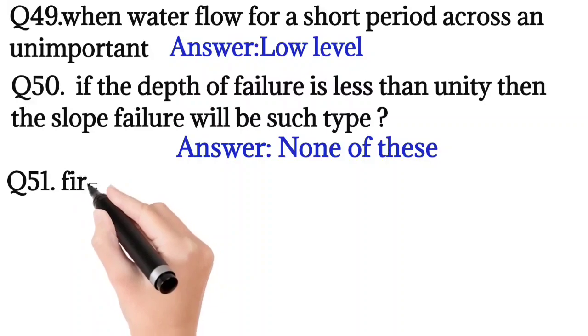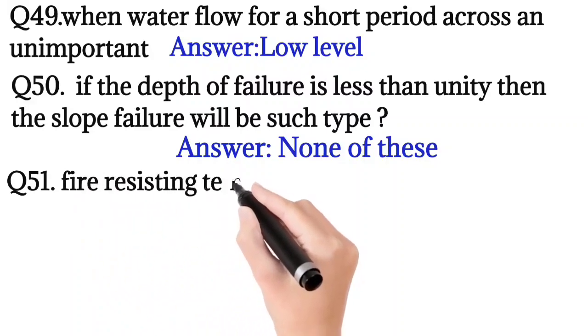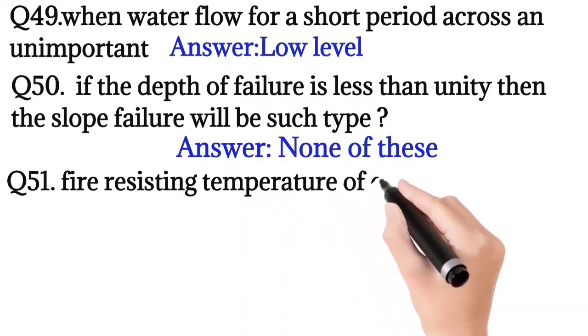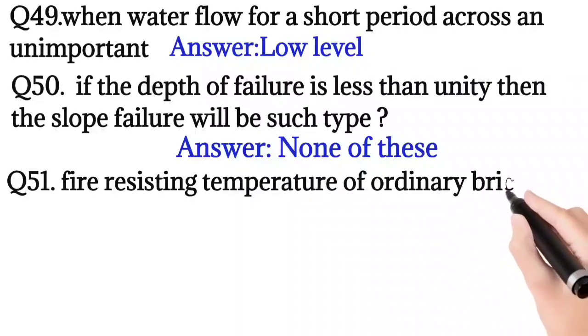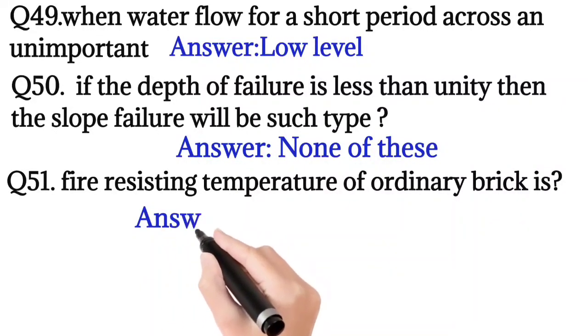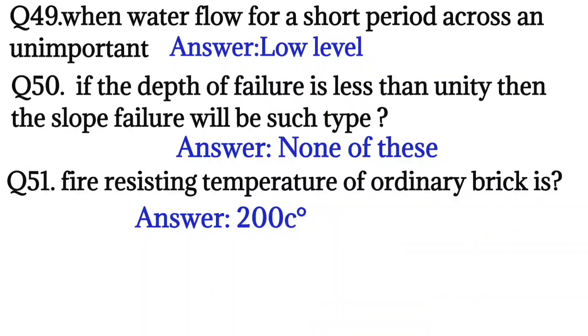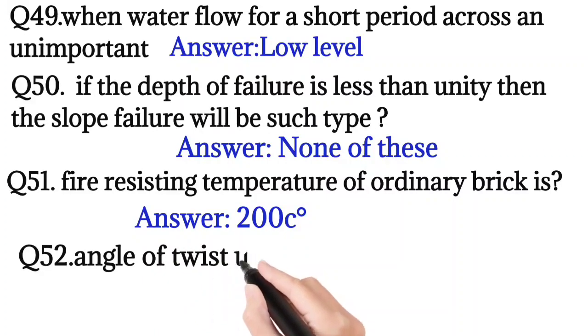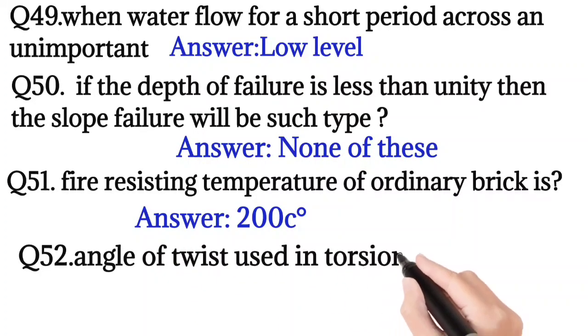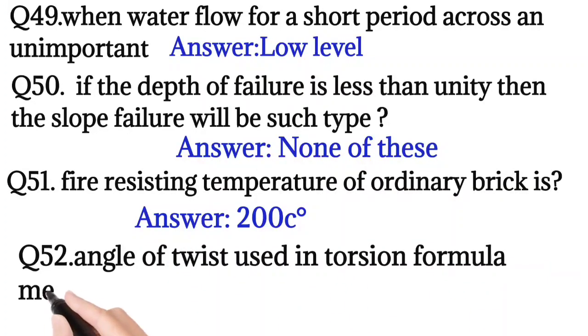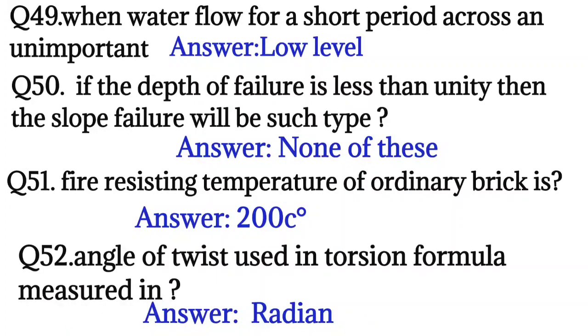Question number 51: Fire resisting temperature of ordinary brick is? So the answer is 200 centigrade. Question number 52: Angle of twist used in torsion formula measured in? So the answer is radian.